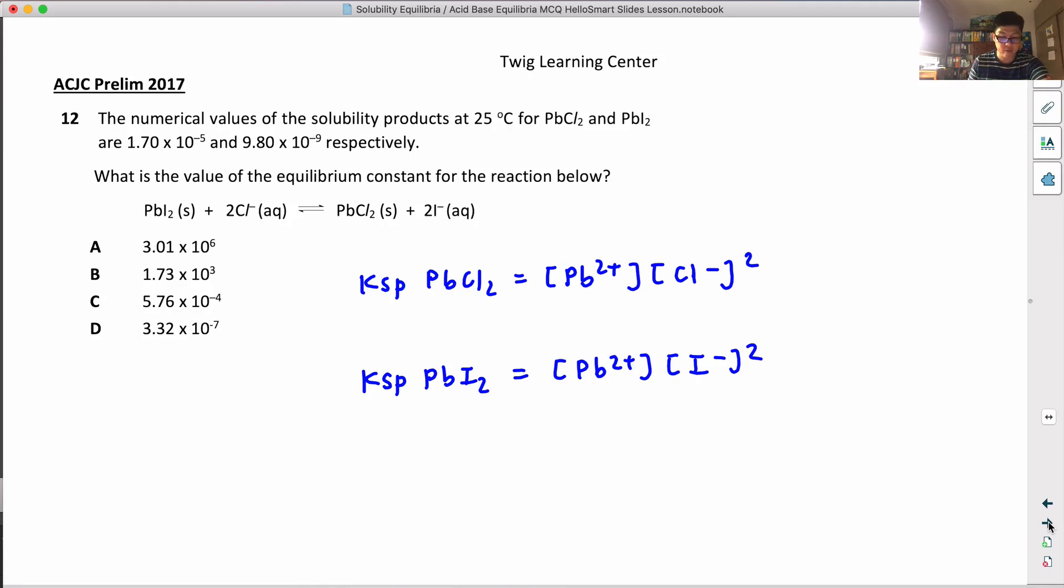Let's run through question 12. The numerical values of the Ksp for lead chloride and lead iodide are given. So the Ksp value for lead chloride actually equals 1.7 times 10 to the power of minus 5. For lead iodide, the value equals 9.8 times 10 to the power of minus 9.